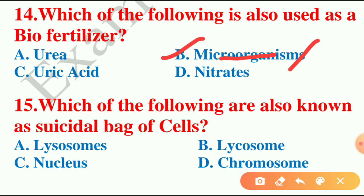Moving on to the next question: which of the following are known as the suicidal bag of cells? The options are lysosomes, lycosome, nucleus, or chromosome. The correct answer is option A — lysosomes. Lysosomes are known as the suicidal bag of cells. That's it for part one.